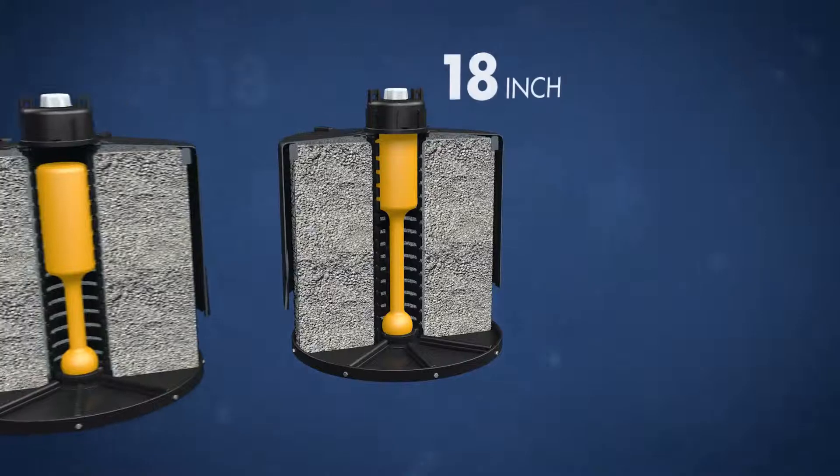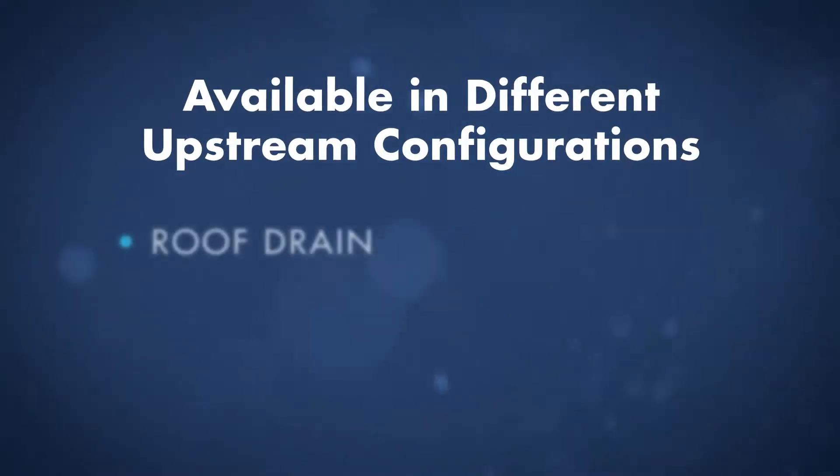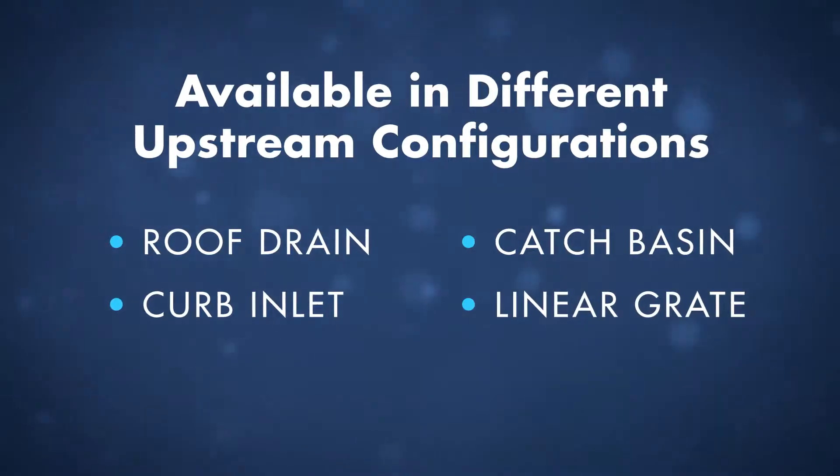The storm filter is available in multiple cartridge heights to meet site-specific hydraulic needs and is available in different upstream configurations, including roof drain, catch basin, curb inlet, linear grate, and infiltration.